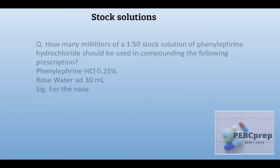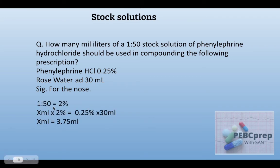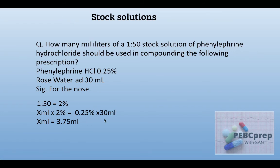Next question: how many milliliters of a 1:50 stock solution of phenylephrine hydrochloride should be used in compounding the following prescription — phenylephrine 0.25%, rose water 30 ml, sig: for the nose? 1:50 equals 2% percentage strength. We put C1 = 2%, V2 = 30 ml, C2 = 0.25%, and solve for V1. We simply get 3.75 milliliters.